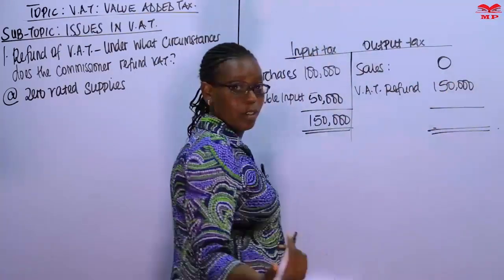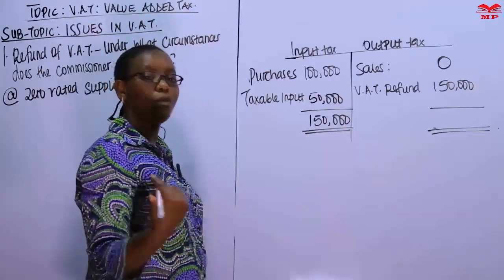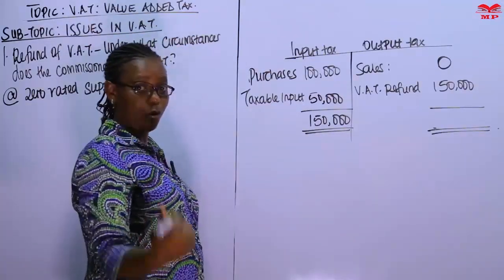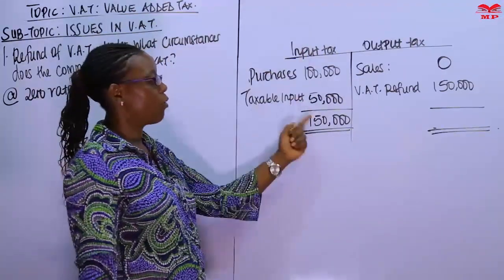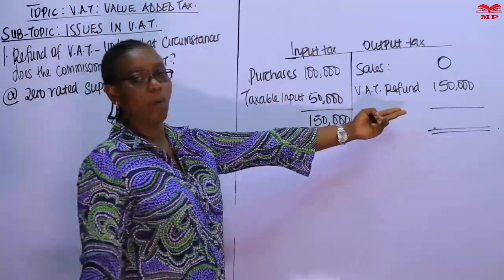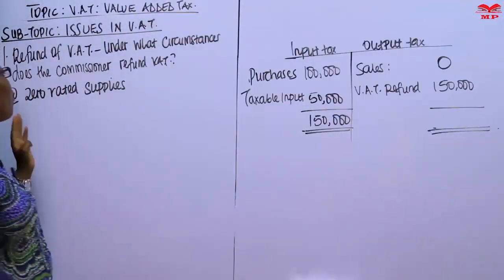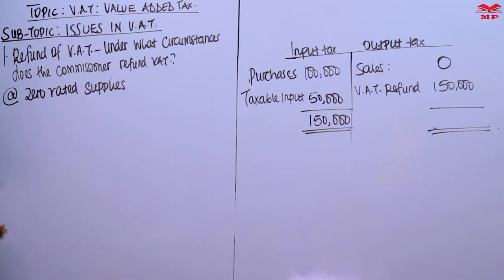The reason is that the incidence of VAT is not on the business — it is always on the consumer. Since you've already paid it, you get it back from KRA. That is how a supplier of zero-rated supplies recovers their VAT from the commissioner.